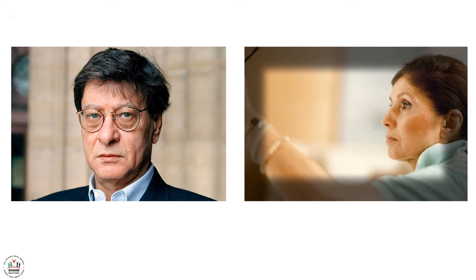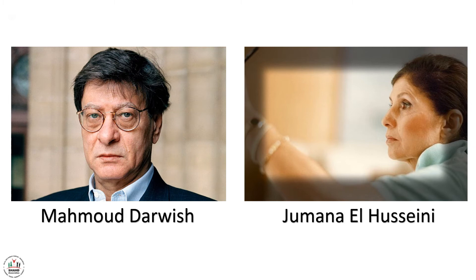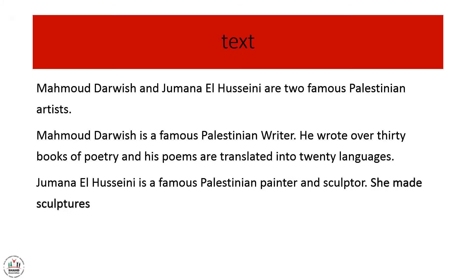Who are the two persons in these pictures? Yes, in the first one, he is Mahmoud Darwish. In the second one, we have Jaman al-Hussaini. Now we will compare and contrast between these two famous artists. To do so, we have to read the following text.